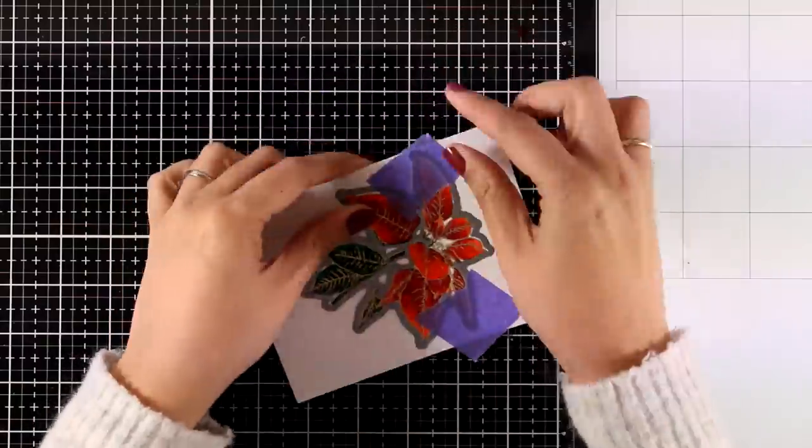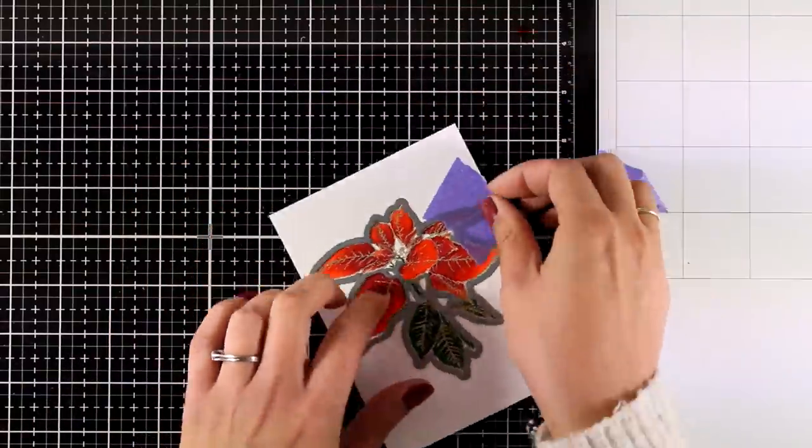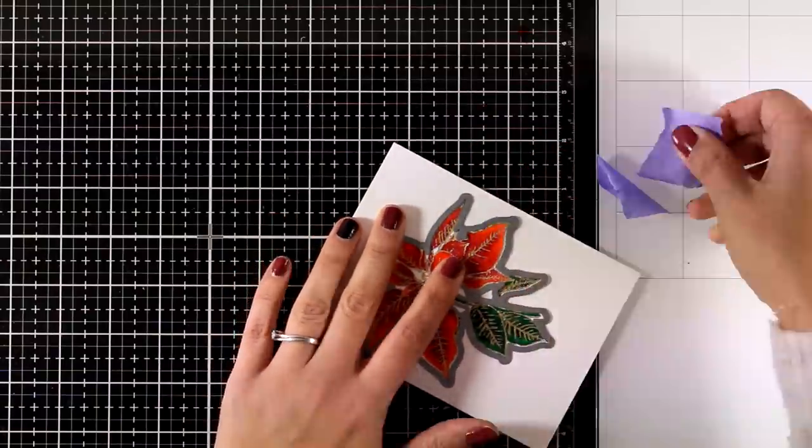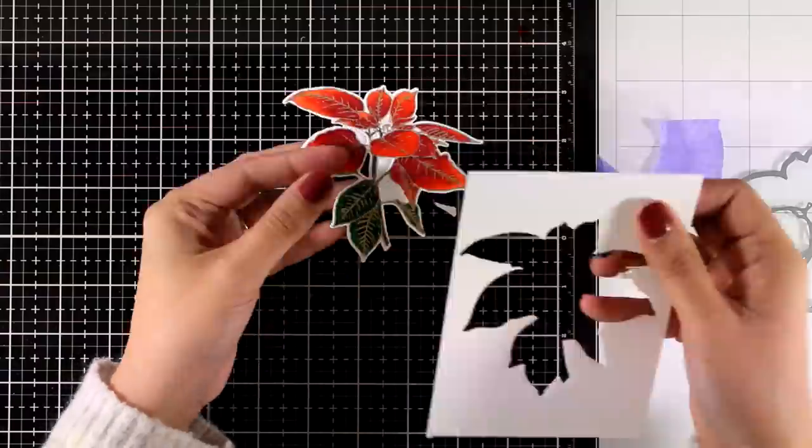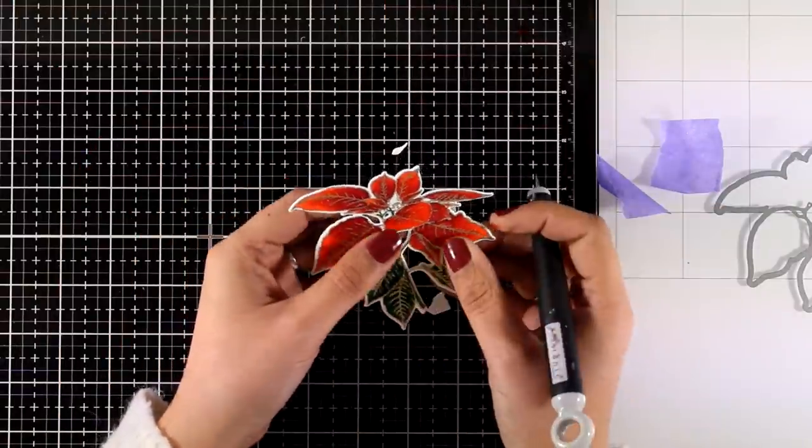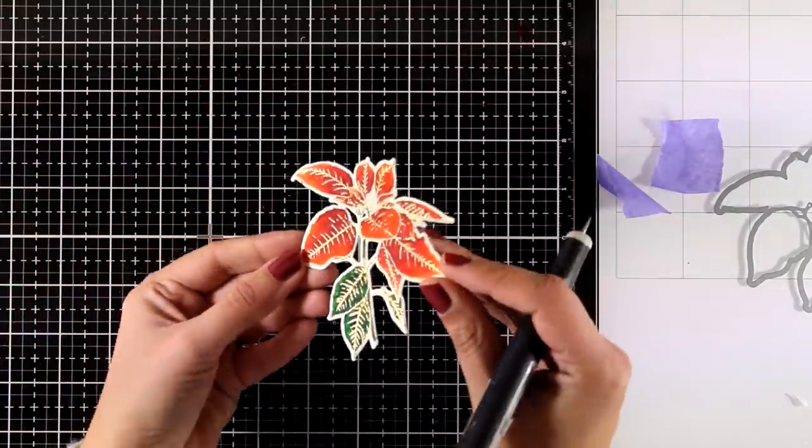And once I was done coloring, I did run it through my Big Shot using the matching die. You can see I'm very carefully peeling off my purple tape, although it doesn't leave any residue. I'm going to pop out my image and I have a gorgeous poinsettia, perfect focal point for a holiday card. And I love the shine on it.